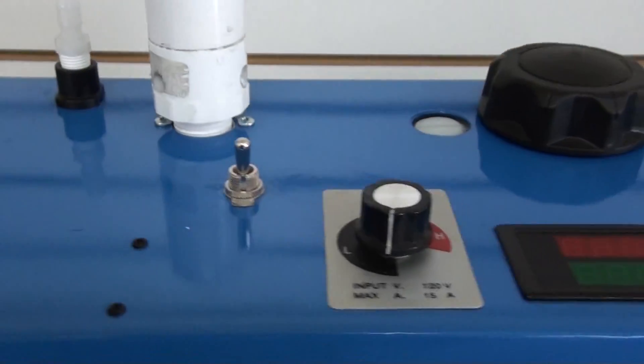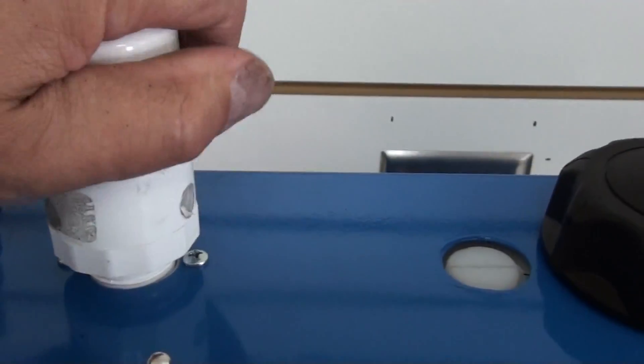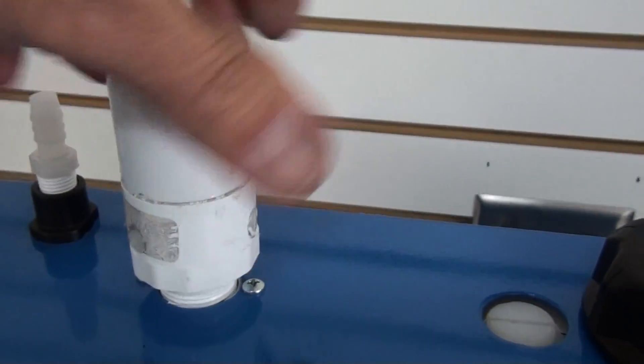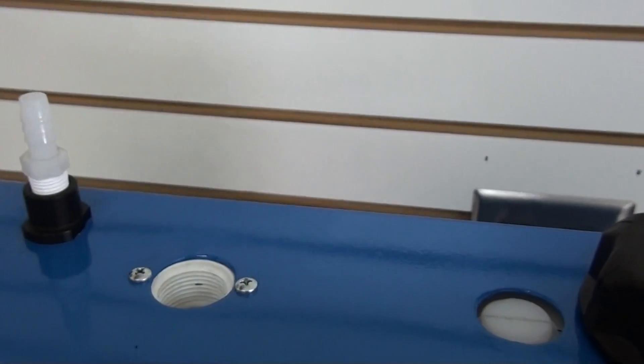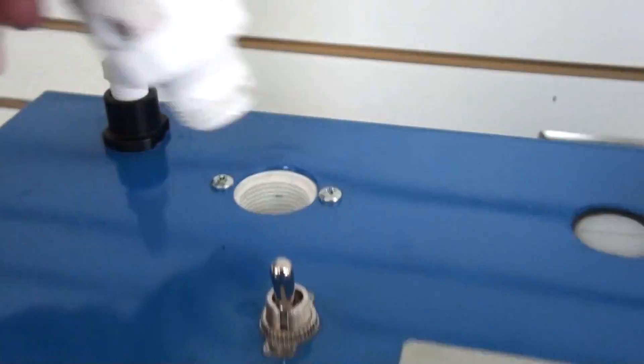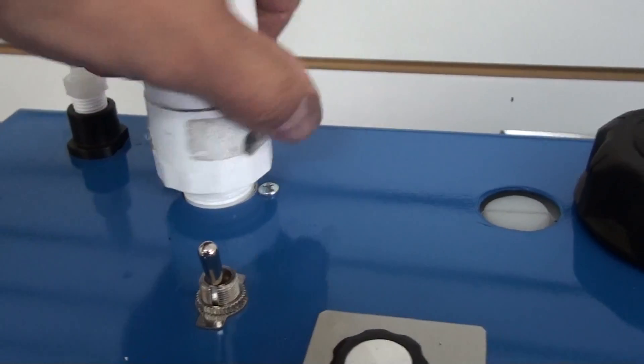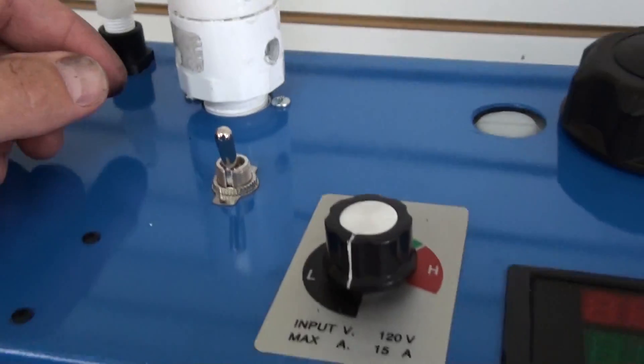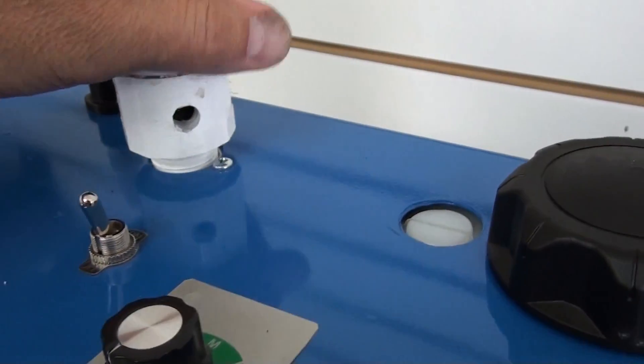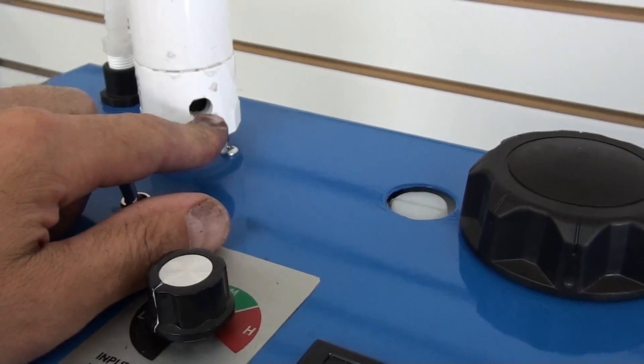So a couple of things also. This is the fill for the water bubbler. You can fill it there. And at the top this also acts as a flash suppression port. If there is a flash in the machine, it will escape through this port.